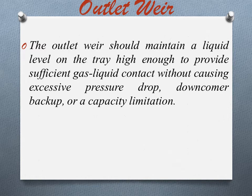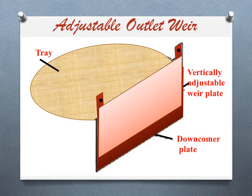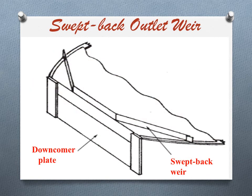The figure shows the adjustable weir, which is used to provide additional flexibility. These are uncommon with conventional trays but are used with some proprietary trays. Next is the swept back weir, shown in the figure. These are used to extend the effective length of side weir either to help balance liquid flows to non-symmetric tray passes or to reduce the tray liquid loads.